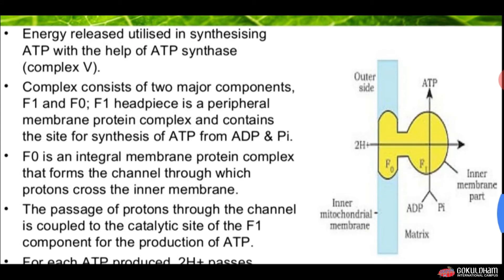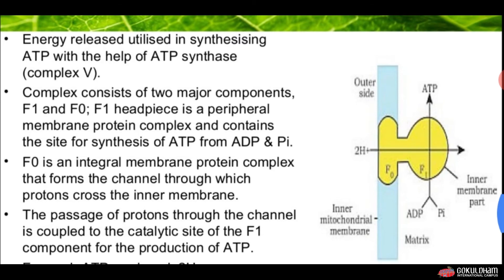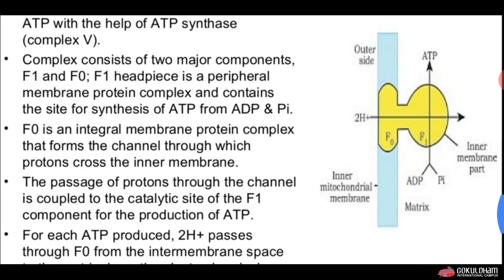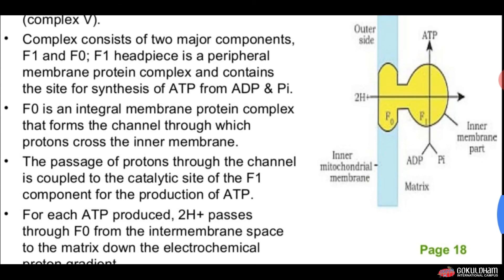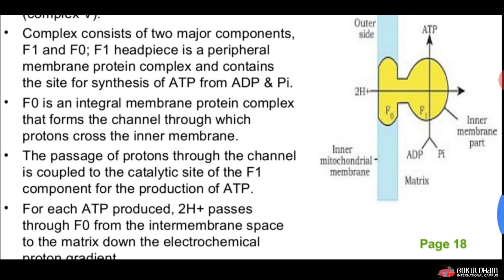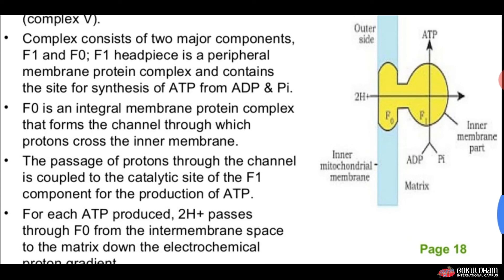The passage of protons through the F0 channel is coupled to the catalytic site of the F1 component for the production of ATP. For each ATP produced, two protons pass through F0 from the intermembrane space to the matrix, down the electrochemical proton gradient.